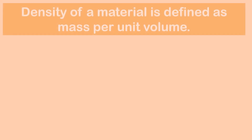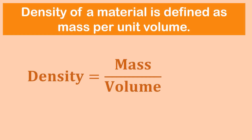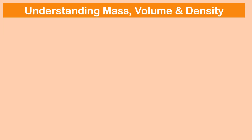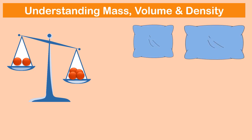Density is the measure of mass per unit volume, its SI unit being kilogram per meter cube. Mass means how much matter is inside that object, and volume is the measure of how much space it occupies.